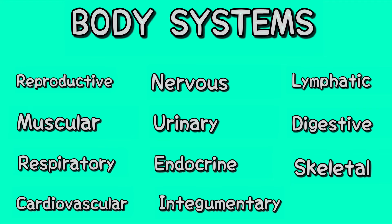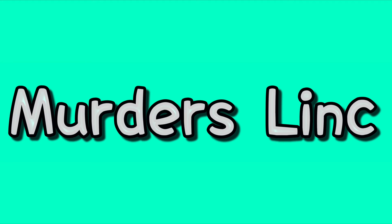The way we're going to learn these 11 body systems is by using a mnemonic. Specifically, these two words right here: Murda's Link. Alright, let me break it down — Murda's Link.